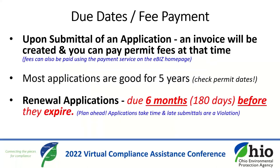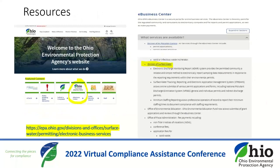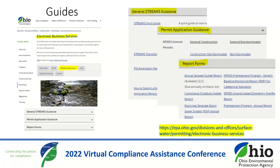Regarding due dates for fees and payments: when applications are submitted, an invoice is created and fees can be paid at that time. Many permits are good for five years — check your permit dates. Renewal applications are due six months before expiration, so plan ahead because late submittals are a violation. There are plenty of resources and guides to help. On Ohio EPA's website, under Featured Content, click 'e-Business Center,' then under 'What Services Are Available,' click 'Division of Surface Water.' Under the STREAMS Applications tab, we have guidance documents that walk you through step by step.